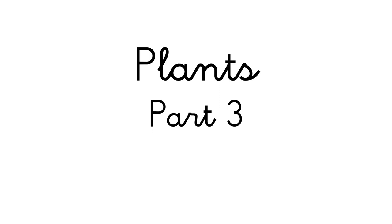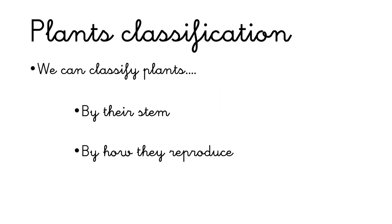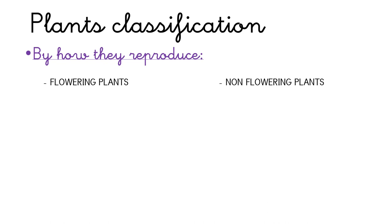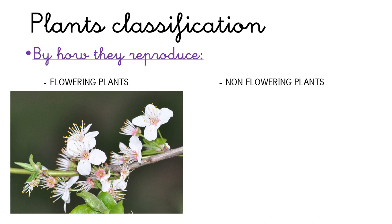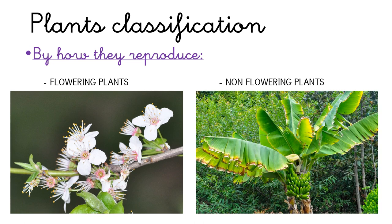Plants part 3. We have seen in other videos that plants can be classified by their stem and by how they reproduce. In this video we are going to see the classification by how they reproduce. Plants can be classified by how they reproduce in flowering plants, if they have flowers, and non-flowering plants, if they haven't got flowers.